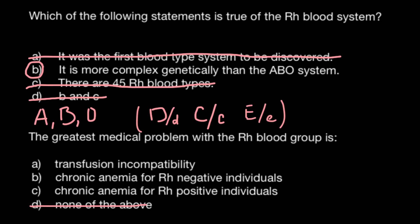Answer C: chronic anemia for Rh positive individuals. This is not true because 85% of people are Rh positive, and as you see, we don't have any problems at all. This is an incorrect answer, so we can cross it out.